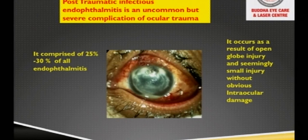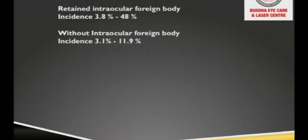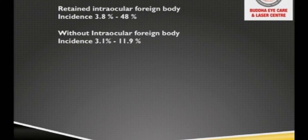Post-traumatic infectious endophthalmitis is uncommon but a severe complication of ocular trauma. It occurs as a result of open-globe injury, and seemingly a small injury without obvious intraocular damage may lead to endophthalmitis. It comprises 25 to 30 percent of all endophthalmitis cases. Retained intraocular foreign body definitely increases the incidence of endophthalmitis in those patients.